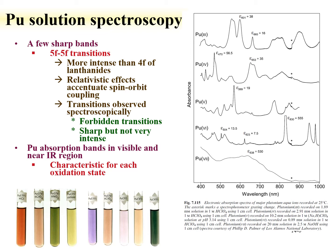Since plutonium solutions have different colors, we would expect to see different UV-visible spectroscopy. This is evidenced by the absorbance spectra of plutonium in perchloric acid for plutonium-3, -4, -5, and -6. There are peaks indicative of each oxidation state — for instance, plutonium-6 has an absorbance at 830 nanometers with a molar absorptivity of 555. Plutonium-4 has peaks around 650 and 730 nm with molar absorptivities on the order of 35 and 60.